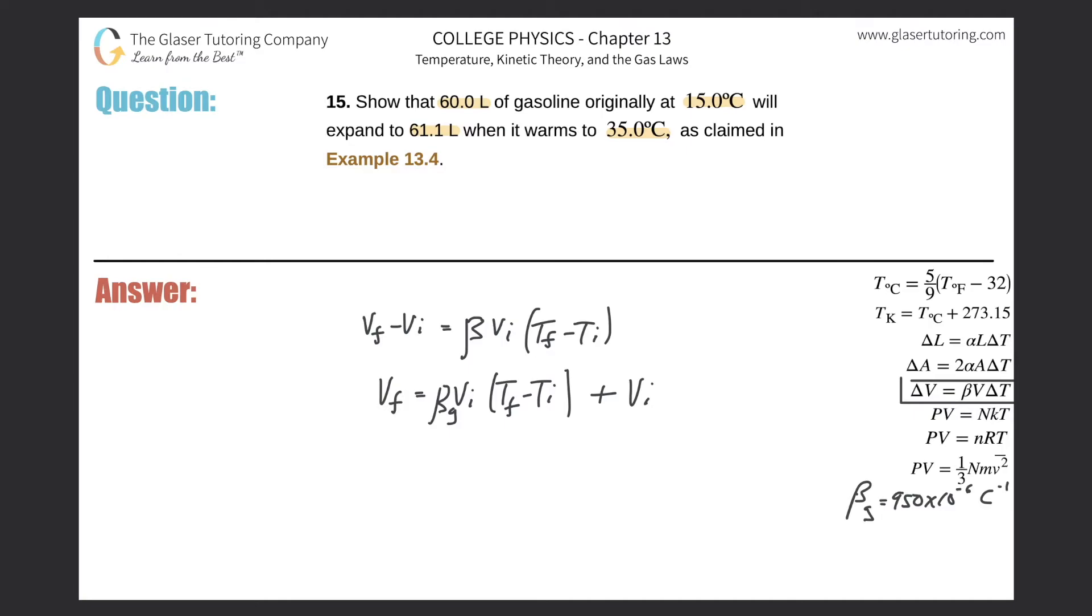We always need the standard units. We need cubic meters. So converting liters into cubic meters, remember just divide by 1000, or move the decimal three places to the left.